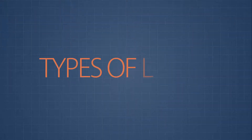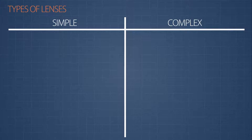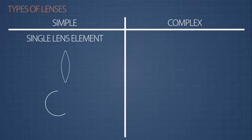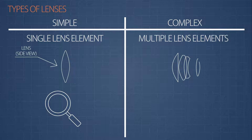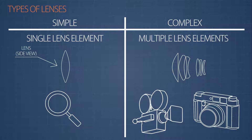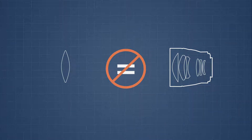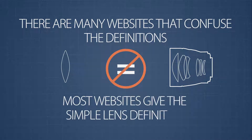Before we get into it, I need to clarify the type of lenses we'll be talking about. There are two broad categories of lenses: simple and complex. A simple lens is one that has a single lens element, like a magnifying glass. Complex lenses are those that contain multiple lens elements inside of a single housing — these are what you see in cinematography and still photography. When you find the focal length of a complex lens, it's the focal length for the entire lens group. In this video, I'm always talking about complex lenses and how they affect cinematography and still photography.